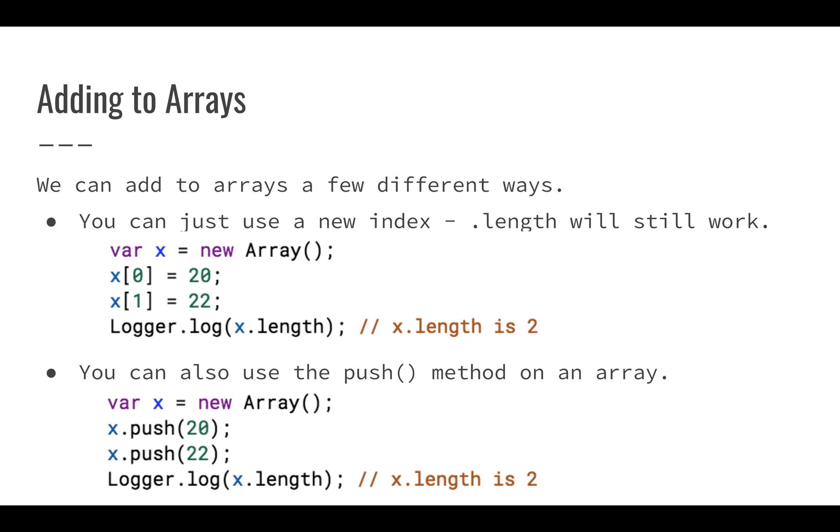We can add to arrays, so arrays in Apps Script, when you create them, they're not static, they don't just stay there the way they are forever. You can add new values. So here in this first example, you can just throw a new index onto it. So if I create an array var x equals new Array, and I use x[0] index, which we haven't actually declared and doesn't exist, but we create it this way, and we use the same thing with x[1] and set that to 22. You can see that if we were to log this, if you were to enter this code in your script editor and run it, you would see that x.length is two. Generally, we don't love this way of adding values to an array just because you could do something like x[50] equals some value, and then you'd have all these empty spaces in your array, which would probably mess up things later.